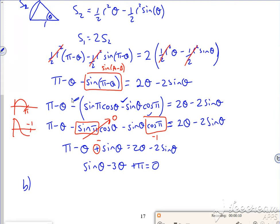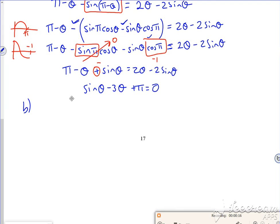Part B says using a suitable change of sign. It gives you the interval 1 to 1.5. So if I do f of 1, it's sine of 1 in radians minus 3 lots of 1 plus π, and...